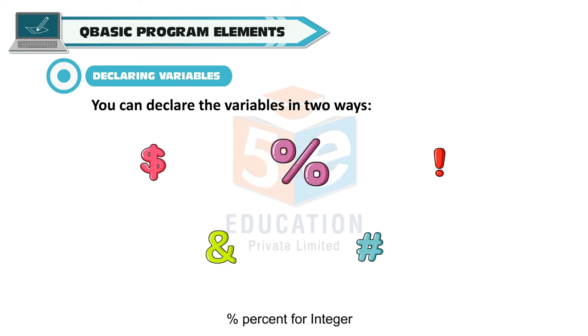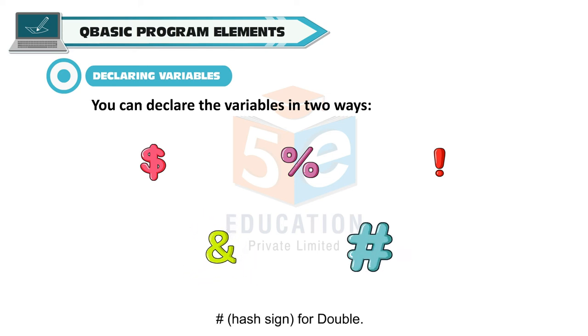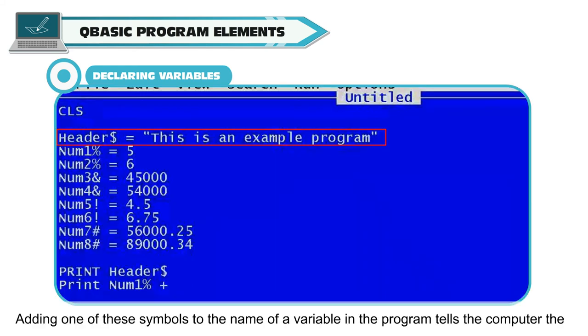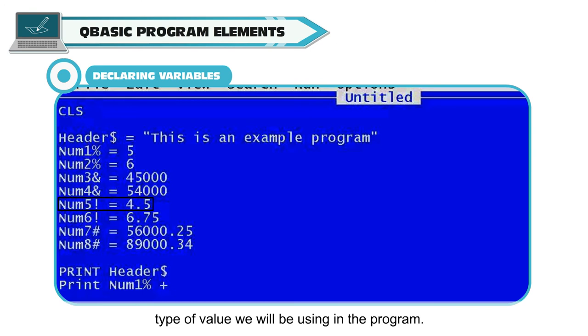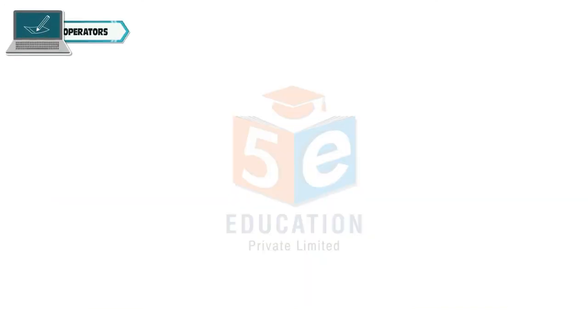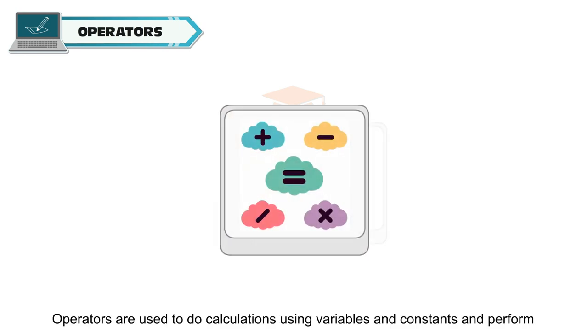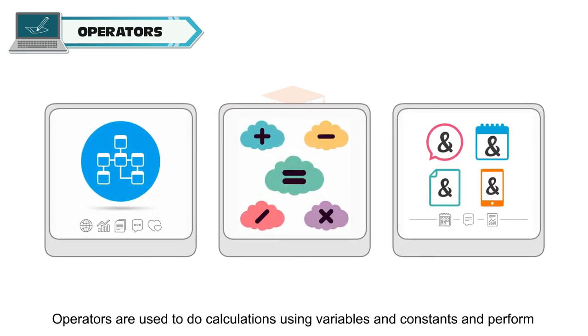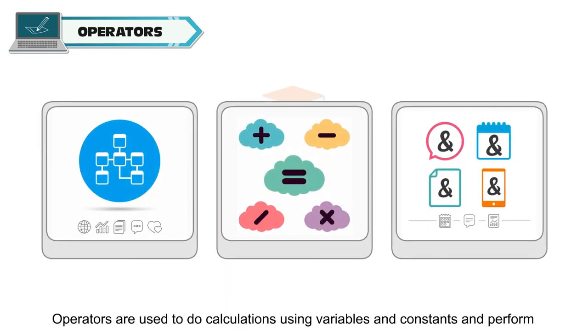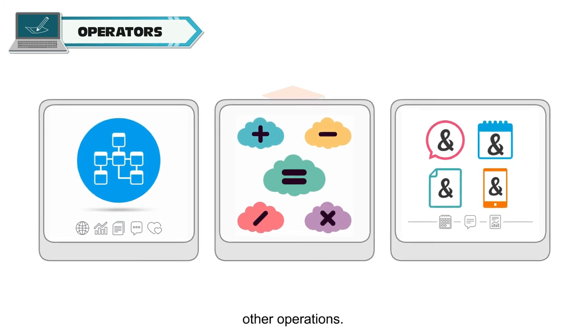Dollar for string, percent for integer, exclamation for single, ampersand for long, and hash sign for double. Adding one of these symbols to the name of a variable in the program tells the computer the type of value we will be using in the program.